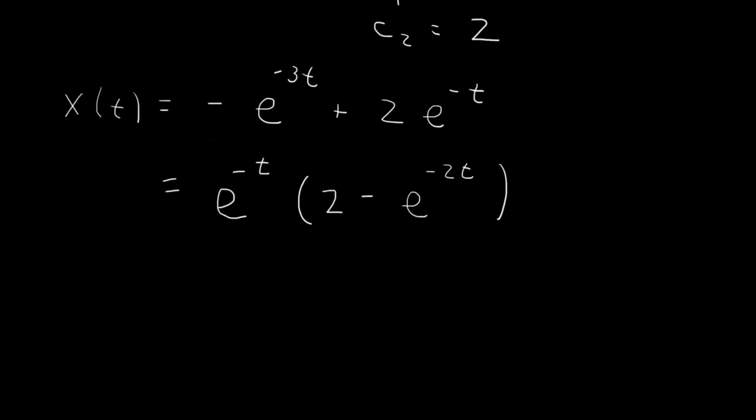Or if you really want the asymptotic in front, you can also write this as 2 e to the minus t, and then we have 1 minus something that decays against 1, which would be 1 half e to the minus 2t. I would claim that perhaps this is the nicest way to write the expression, so you see that the asymptotic decay is 2 times e to the minus t.